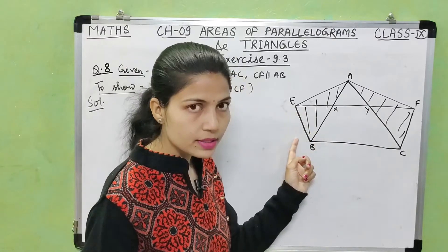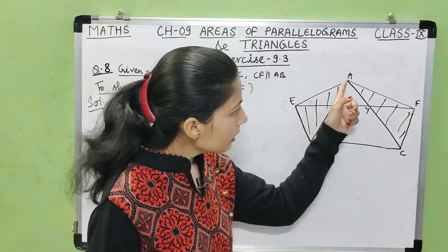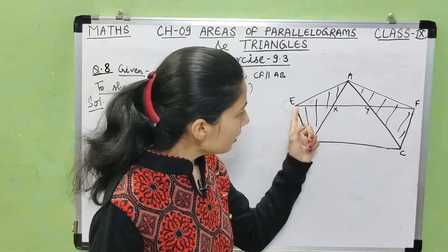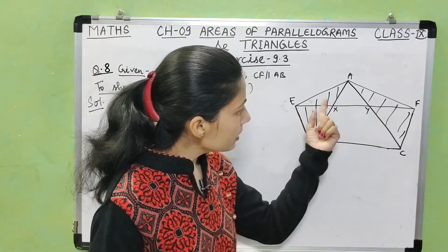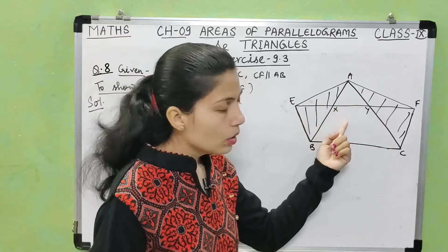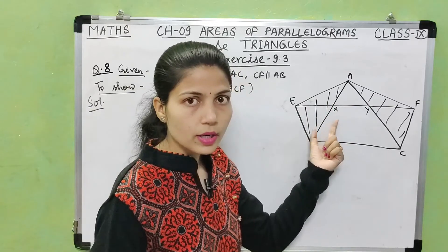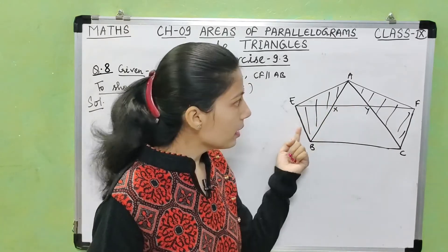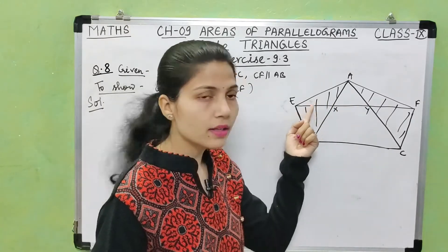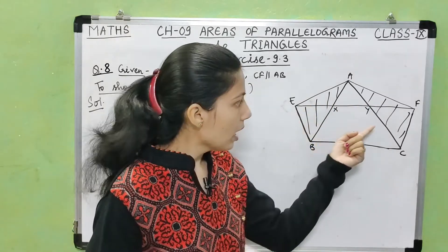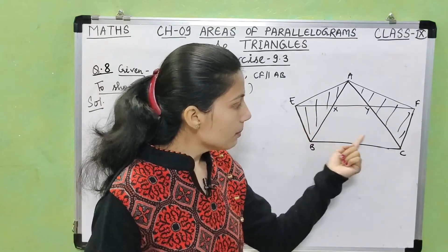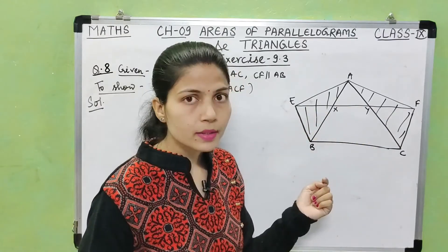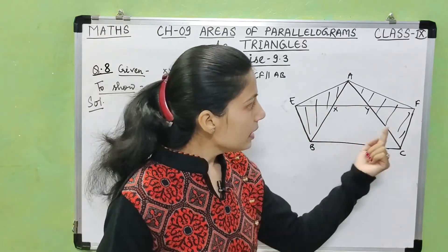Now, triangle AEB and parallelogram EYCB share the same base BE and lie between the same parallels AC and EB. So the area of triangle AEB is half the area of parallelogram EYCB.